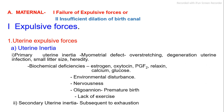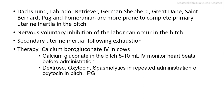Environmental disturbances such as nervousness, premature birth, and lack of exercise can contribute. Secondary uterine inertia is subsequent to exhaustion. Breeds more prone to complete primary uterine inertia in the bitch include Dachshund, Labrador Retriever, German Shepherd, Great Dane, St. Bernard, Pug, and Pomeranian. Nervous voluntary inhibition of labor can also occur in the bitch.